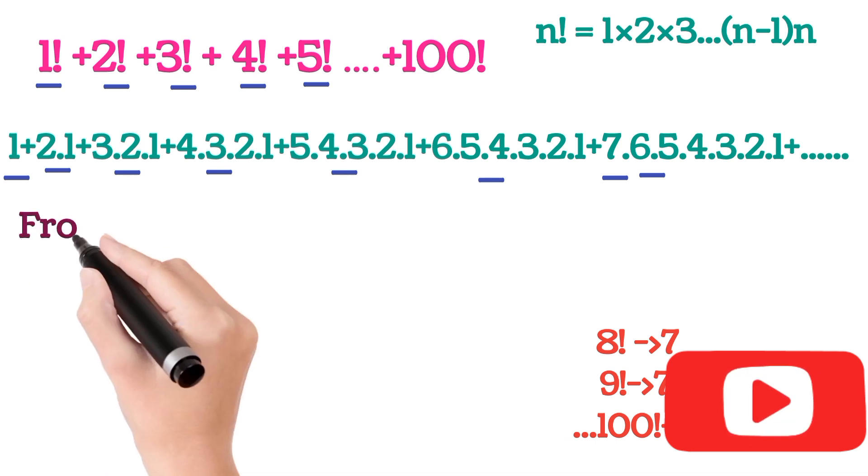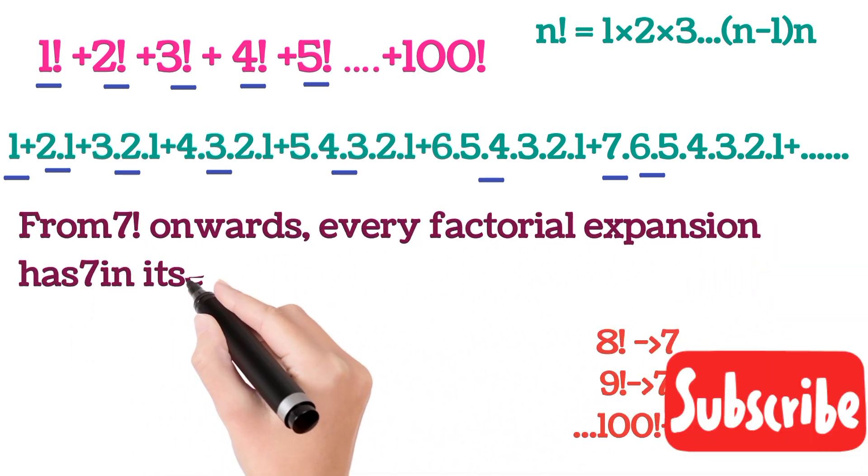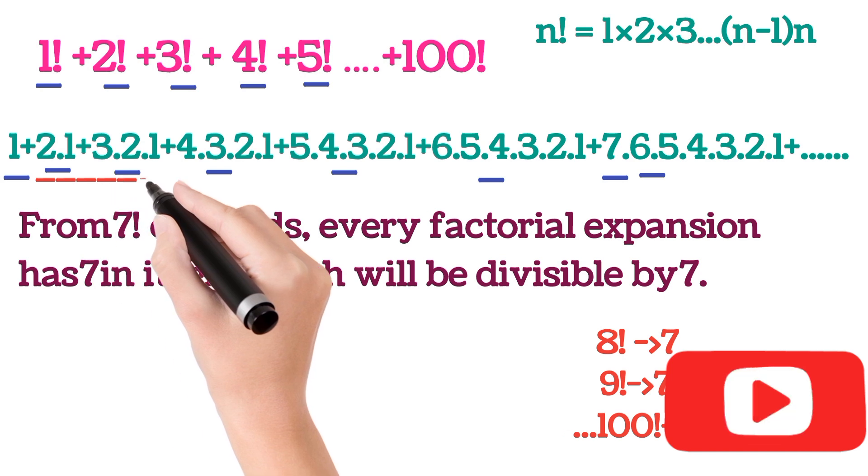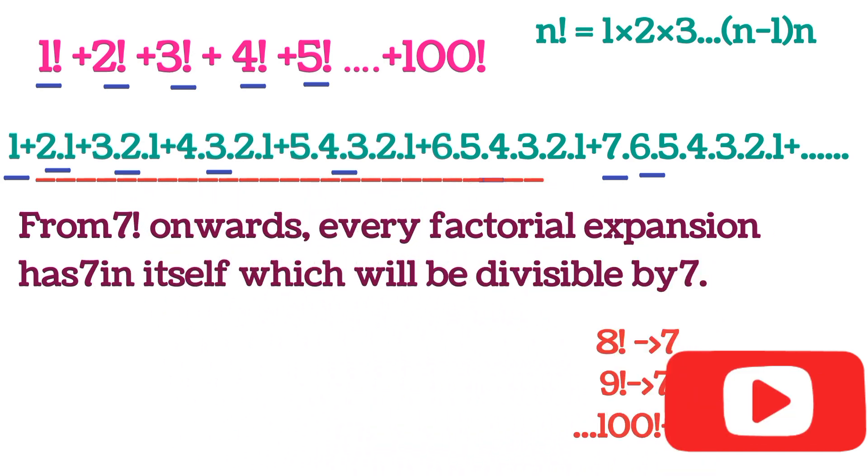We can say that from 7 factorial onwards, every factorial expansion has 7 itself which will be divisible by 7. So the sum of these terms before 7 factorial will give us the remainder.